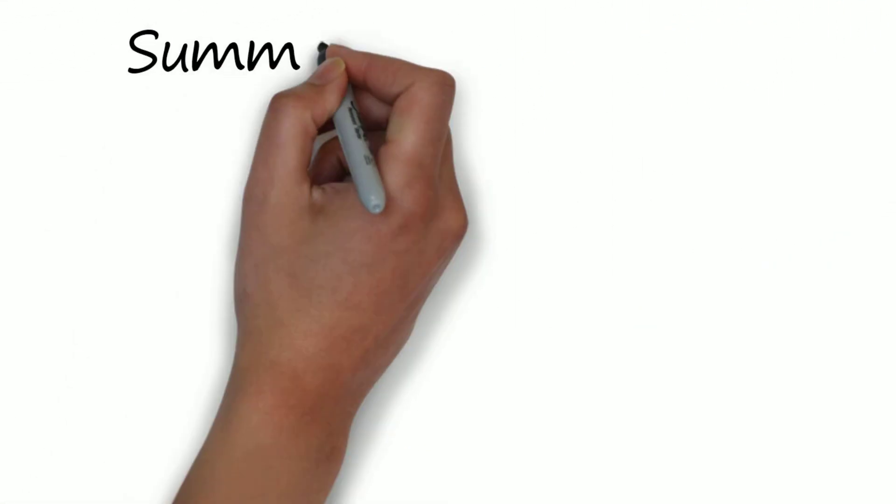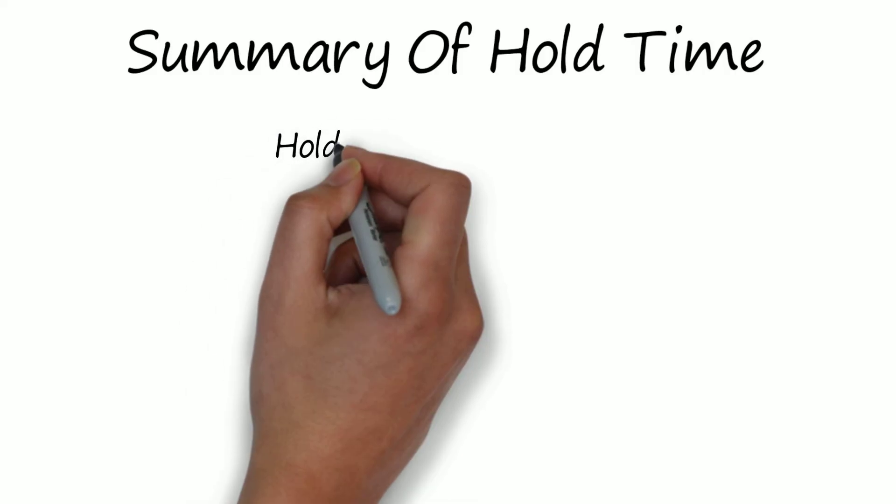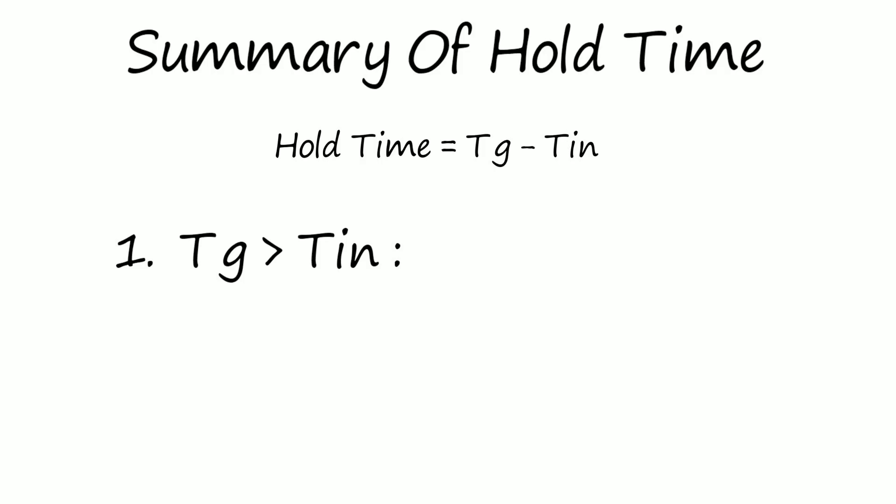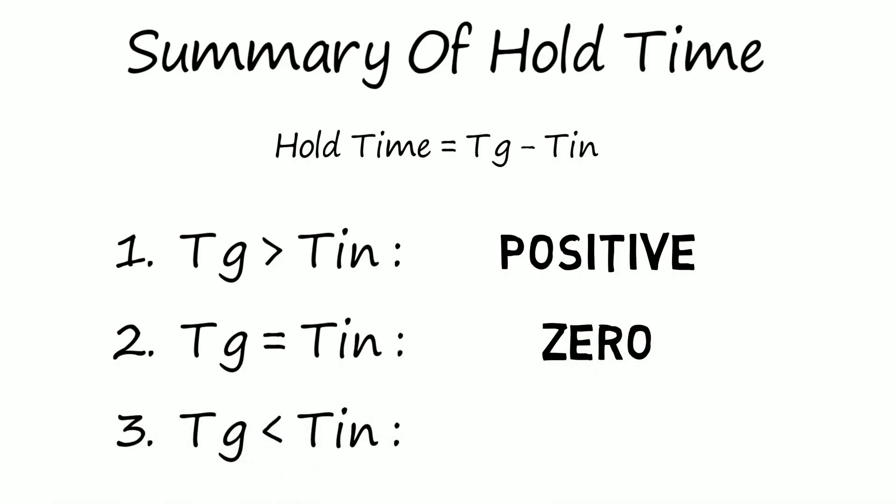Summarizing all the three cases that we saw for the hold time. If transmission gate switching delay is more than the data path delay, the hold time is positive. If both of these are equal, the hold time is 0. And if the data path delay is more than the transmission gate switching delay, the hold time becomes negative.